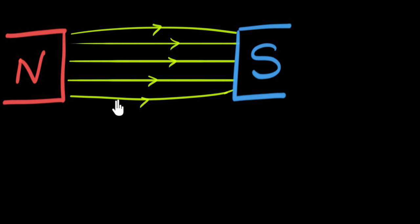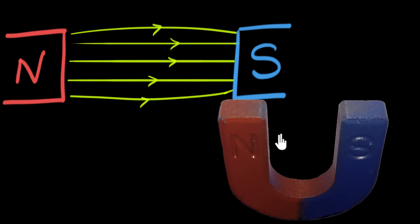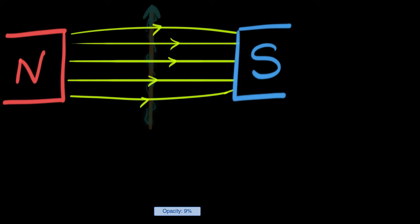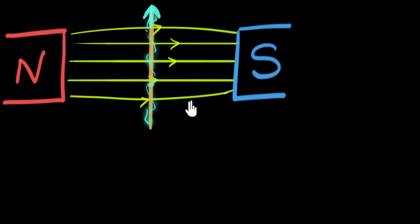Now we can place a current carrying wire here and perform our experiment. If you're wondering how to get two poles like this, you can do two things: either get two giant bar magnets, one for each pole, or use something called a horseshoe magnet, which looks like a horseshoe as shown here. The poles of a horseshoe magnet are apart, just like what we need. Now let's place our current carrying wire in this magnetic field. You can pass current through it by attaching it to a battery, and then we can perform experiments to see what the force depends on.